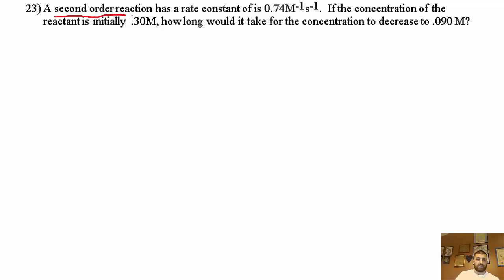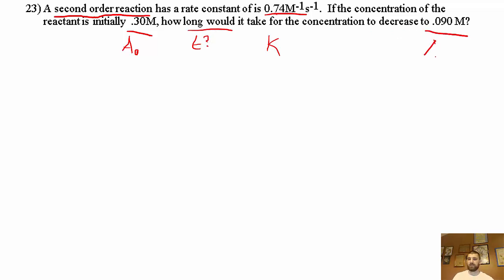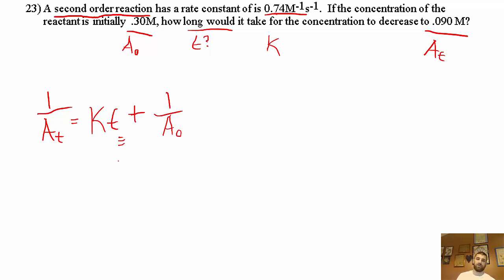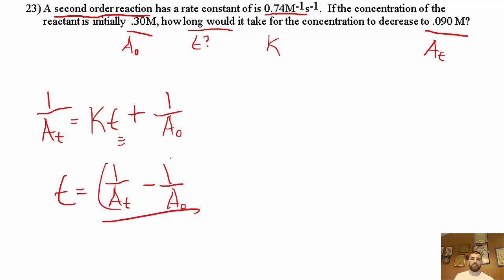Problem 23: a second-order reaction has a given rate constant K. If the initial concentration is known, how long does it take for the concentration to decrease to the given final value? Using 1/[A]t = Kt + 1/[A]0, rearranging to solve for T: T = (1/[A]t − 1/[A]0) / K. Plugging in all values gives T = 11 seconds.